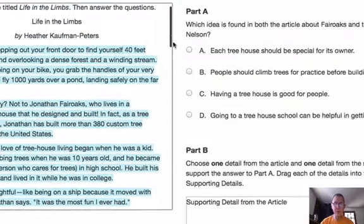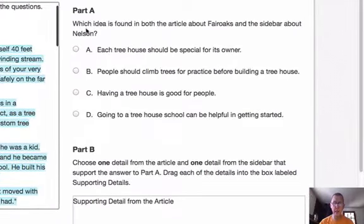On the right you've got two questions. The Part A question is: which idea is found in both the article about Fair Oaks and the sidebar about Nelson? I would read the articles and then figure out the answer. I believe the correct answer is having a tree house is good for people, the C answer. So I'm going to click the button next to C.